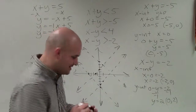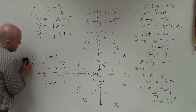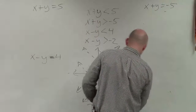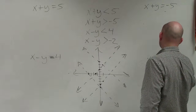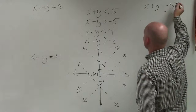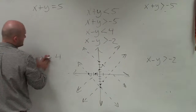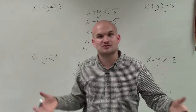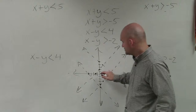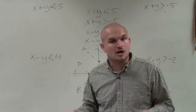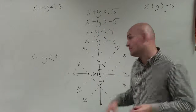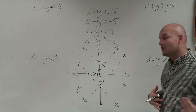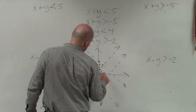Now comes the fun part — testing. When we test, we revert back to our inequalities, not equations. The best test point to choose is 0 comma 0, as long as none of your boundary lines pass through the origin. That makes the algebra easy. Let's plug 0 comma 0 into each inequality to determine which side to shade.